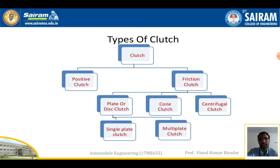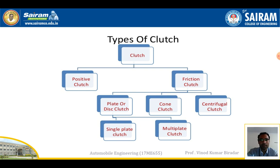So far, questions on different types of clutches have not been asked in examinations, but we don't know when they may ask. Different types of clutches: the clutch can be divided into two sections — positive clutch and friction clutch. Friction clutches are further classified based on the number of discs into plate or disc clutch, cone clutch, and centrifugal clutch. Plate clutches are again divided into single plate clutch and multi-plate clutch.